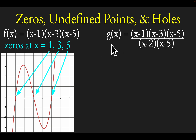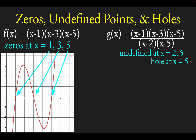So with that in mind, let's look at this function on the right. What's a little different here is we have some factors in the denominator — an expression written as a product of two factors. If either of those two factors is zero, we would be dividing by zero, so this function g of x would be undefined at x equals 2 and x equals 5. Also, because we have a factor of x minus 5 in both the numerator and denominator, there's going to be something called a hole at x equals 5.